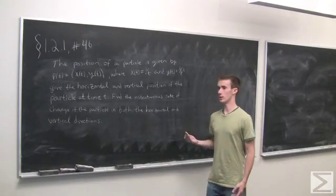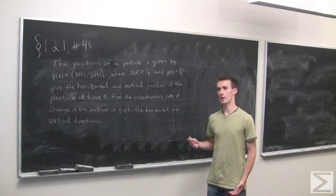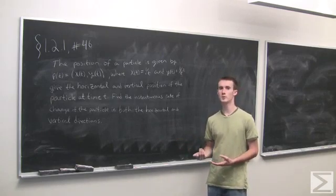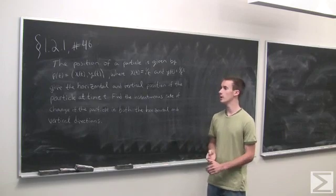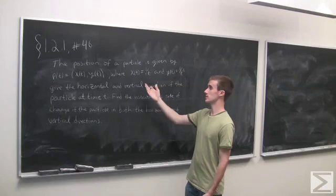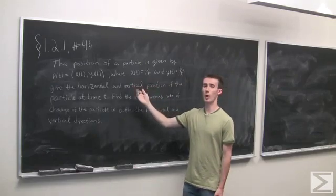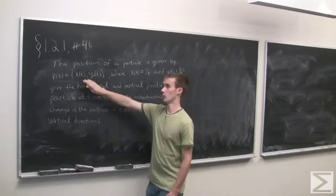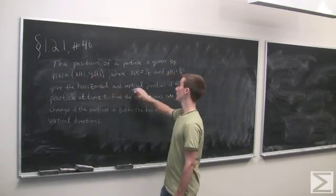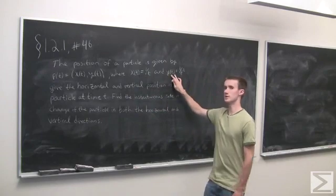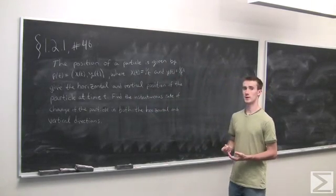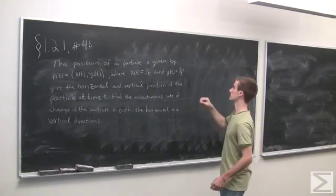In order to find the rate of change at any given point, we need to look at both the rate of change in the horizontal direction and the rate of change in the vertical direction. So we're given that the function is x of t comma y of t — the horizontal component and the vertical component — and we want to find the instantaneous rate of change, starting with x of t.